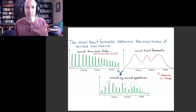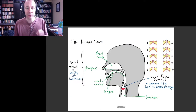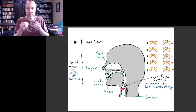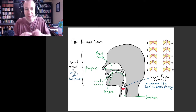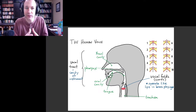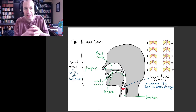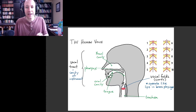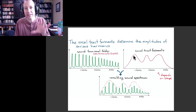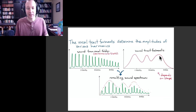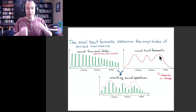We've got our model that the voice starts from these vibrations of the vocal folds, whose pitch — that vibration frequency which determines the pitch — has to do with how tight the vocal folds are. Then that sound goes into the vocal tract, and certain frequencies are emphasized and other frequencies are suppressed. The ones that are emphasized are the natural frequencies of this cavity.